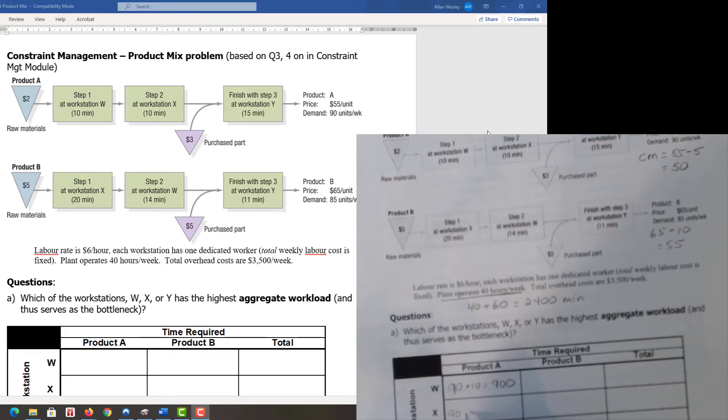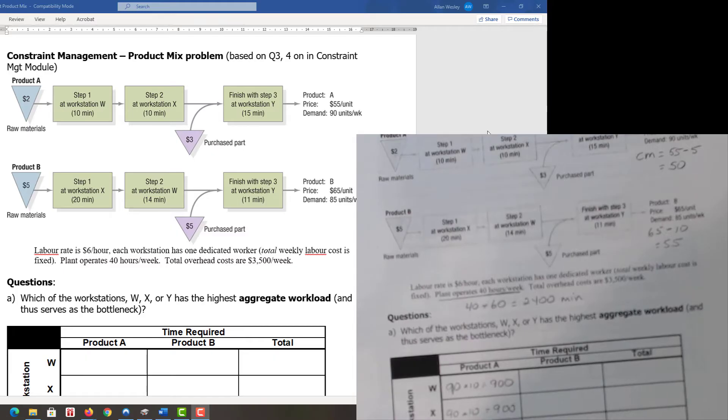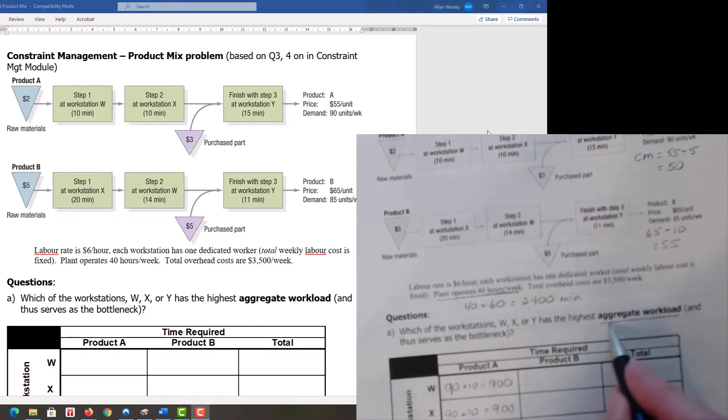At workstation Y, we still have the same 90 units that we could possibly sell, times 15 minutes, which equals 1,350 minutes consumed by product A on workstation Y. This is what we call our aggregate workload.